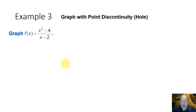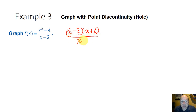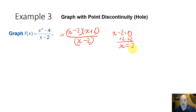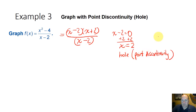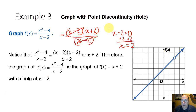Let's look at another example of a graph that has a point discontinuity. Here we have x squared minus 4 over x minus 2. Factoring x squared minus 4 gives x minus 2 times x plus 2 in the numerator over x minus 2 in the denominator. Setting x minus 2 equal to zero gives x equals 2, so instead of a vertical asymptote at 2, there is a hole or point discontinuity there. After the x minus 2s cancel out, we get the line f(x) equals x plus 2 — with a y-intercept of 2 and a slope of 1, but with that point discontinuity at x equals 2.